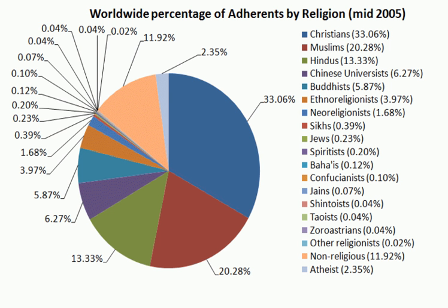Between 400 and 1000 CE, Hinduism expanded as the decline of Buddhism in India continued. Buddhism subsequently became effectively extinct in India but survived in Nepal and Sri Lanka.